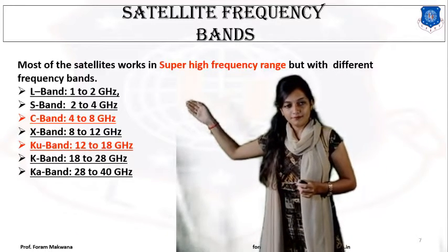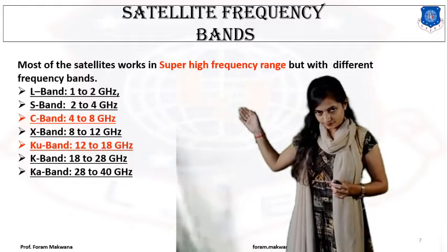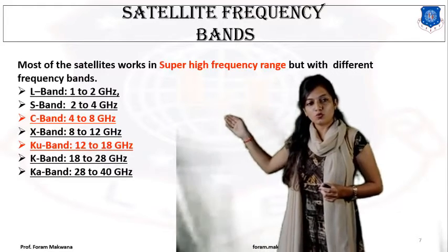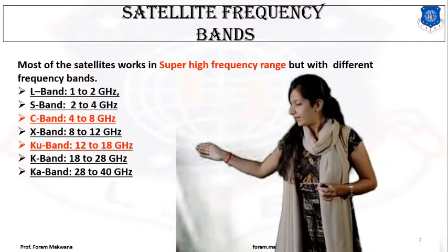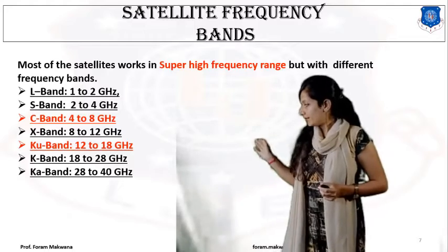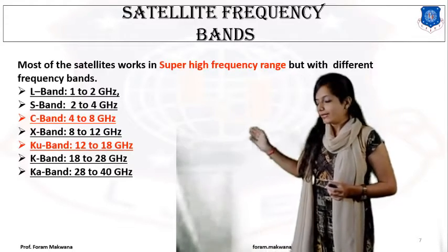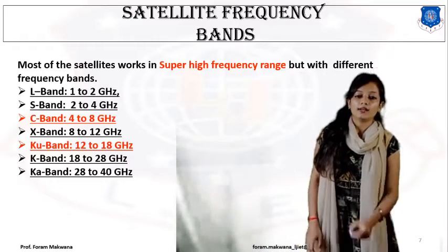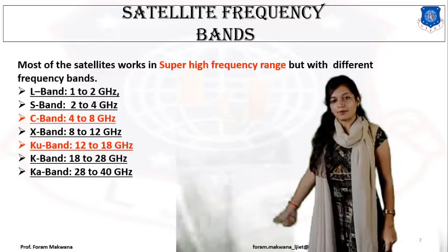For L band, the frequency is 1 to 2 gigahertz. For S band, the frequency is 2 to 4. For C band, 4 to 8. X band, 8 to 12. K band, 12 to 18. Ku band, 18 to 28. And the last one, Ka band has 28 to 40 gigahertz. So these are the microwave frequency bands.